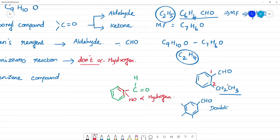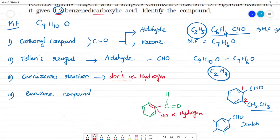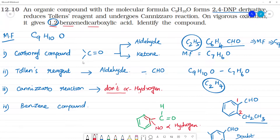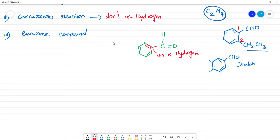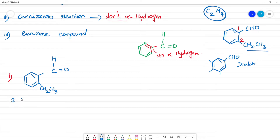Under vigorous oxidation, the CHO group converts to a COOH group and the CH2CH3 group also converts to a COOH group, giving 1,2-benzene dicarboxylic acid. So the compound identified is 2-ethylbenzaldehyde — with the ethyl group at the second position.